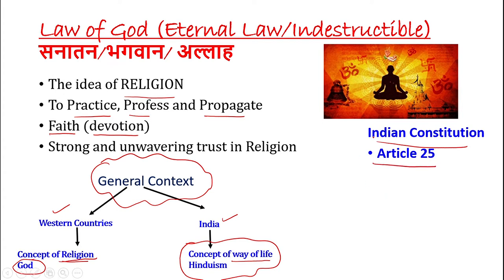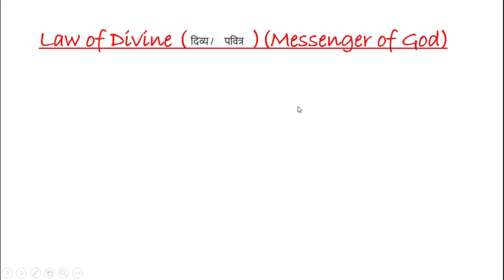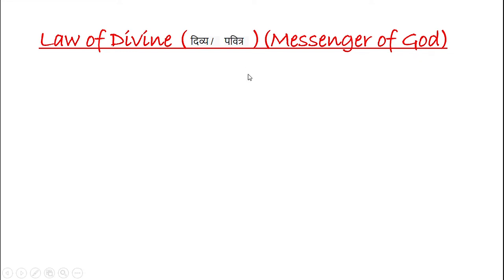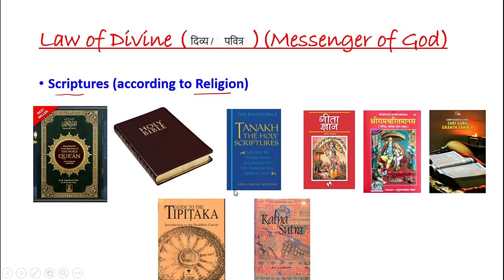The second classification as per Thomas Aquinas is law of divine. Law of divine ka concept yeh kehta hai ki Allah ka ek banda hai, usne aakar apni saari revelations hamen ki hain, aur uske liye humne ek kitaab bana di hai. So basically, jab hum law of divine ki baat karte hain, hum scriptures ki baat karte hain — jo religion to religion vary karte hain — jaise Quran, Bible, Buddhism ki alag kitaab, Hinduo ki Geeta, Sikho ki Guru Granth Sahib, Jainism ki alag, Jews ki alag. Yeh sab messenger of God mein aate hain, aur apne scriptures ko protect aur preserve karne ka humein pura adhikar hai.